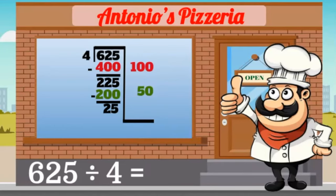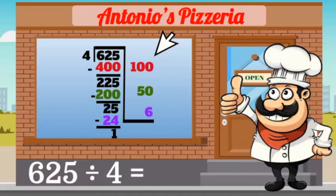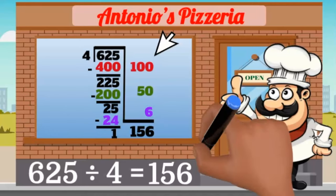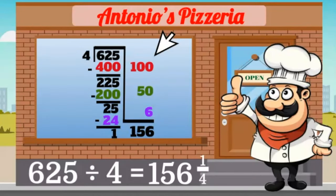4 times 6 equals 24. That leaves 1, which will be my remainder. I add the partial quotients on the right to determine the final quotient: 156. I represent the remainder as the fraction 1 fourth. My 4 chefs will each need to make 156 pieces of cheesy bread, and 1 chef will get to make 1 extra.